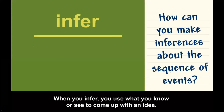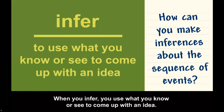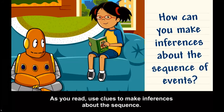Sometimes the order of events isn't so clear. How can you make inferences about the sequence of events? When you infer, you use what you know or see to come up with an idea. As you read, use clues to make inferences about the sequence.